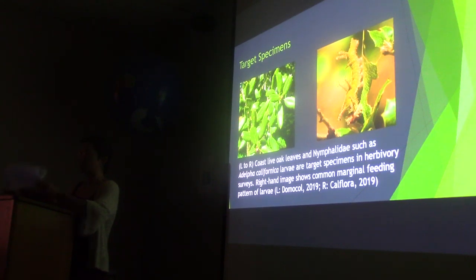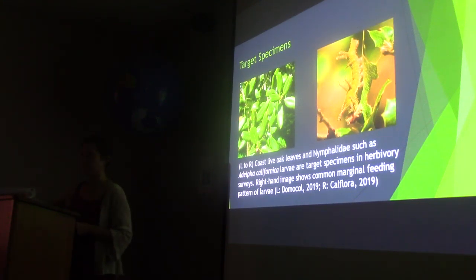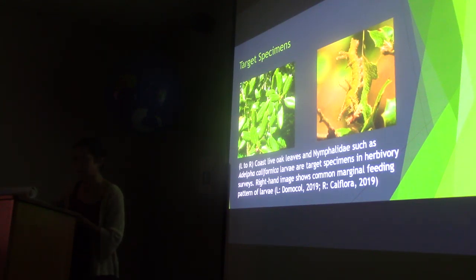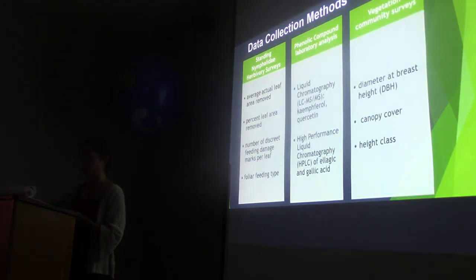The target individuals were mature coast live oaks and saplings at least 1.2 meters in height. A total of 502 individual specimens were sampled across the different elevation sites. The next slide shows the various sites and their corresponding mean temperatures.